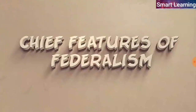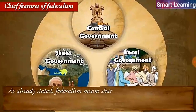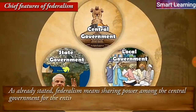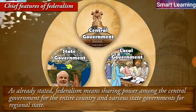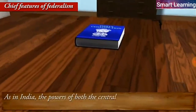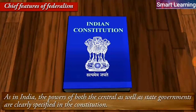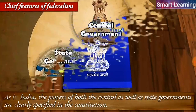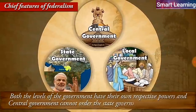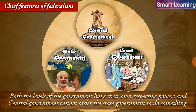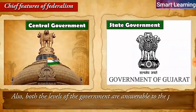Chief features of federalism. Federalism means sharing power among the central government for the entire country and various state governments for regional areas. As in India, the powers of both the center as well as the state governments are clearly specified in the constitution. Both levels of government have their own respective powers, and the central government cannot order the state government to do something. Also, both levels of government are answerable to the people through the legislature.